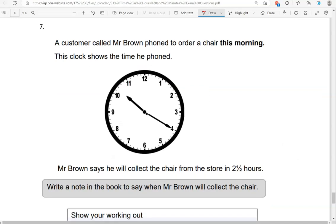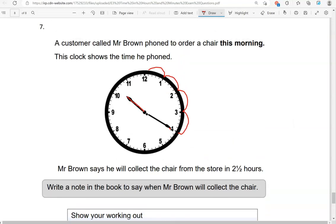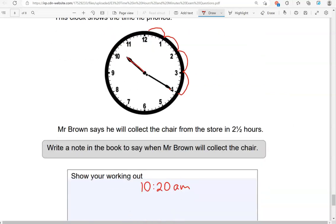A customer called Mr. Brown phoned to order a chair this morning. This clock shows the time he phoned. So that is 10:20 AM as it's in the morning. Mr. Brown says he will collect the chair from the store in two and a half hours. Write a note in the box to say when Mr. Brown will collect the chair.